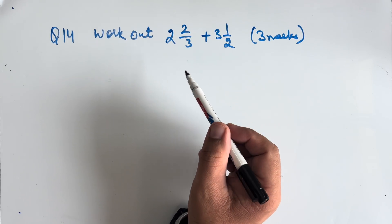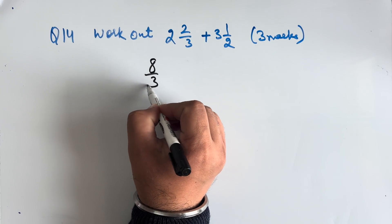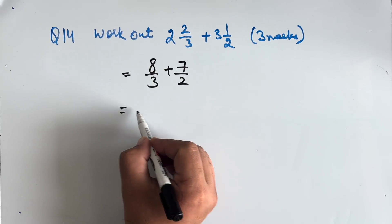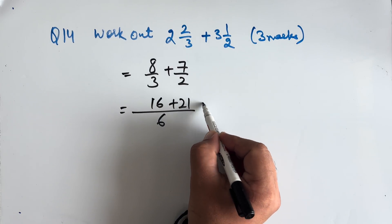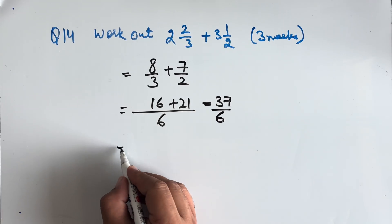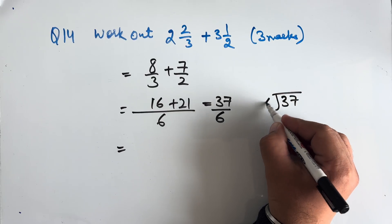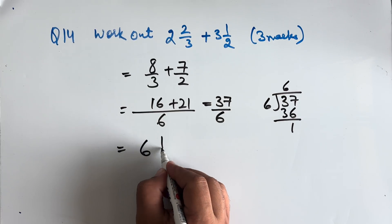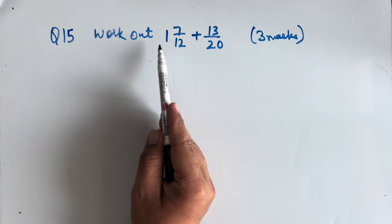Question 14: Work out 2 and 2/3 plus 3 and 1/2. This is worth 3 marks. 2 and 2/3 becomes 8/3 and 3 and 1/2 becomes 7/2. Taking LCM as 6: 16 plus 21 = 37/6. Writing as a mixed fraction: 37 divided by 6 gives 6 remainder 1, so our final answer is 6 and 1/6.